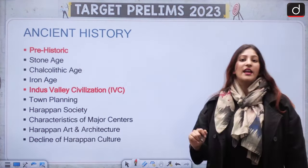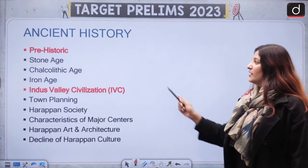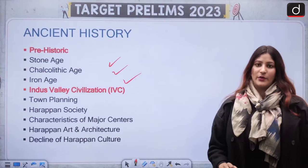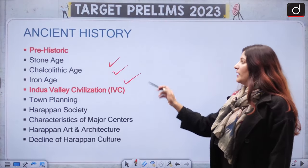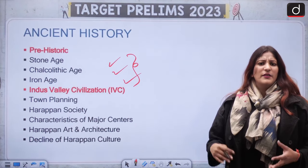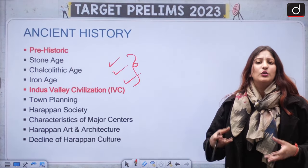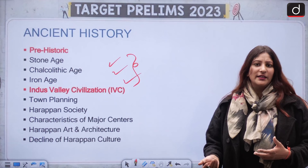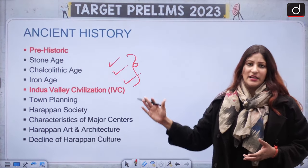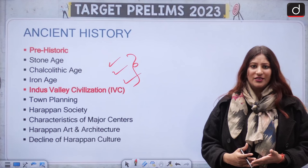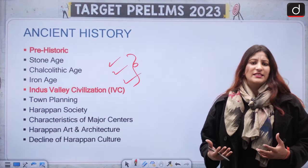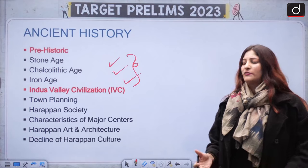Now we have Ancient History. Here we have Prehistoric — Stone Age, Chalcolithic Age, and Iron Age are important. Know the significance of these periods, the time span, which kind of sculptures, tools, or cave paintings were recorded in which age, when domestication started, and when agriculture started.